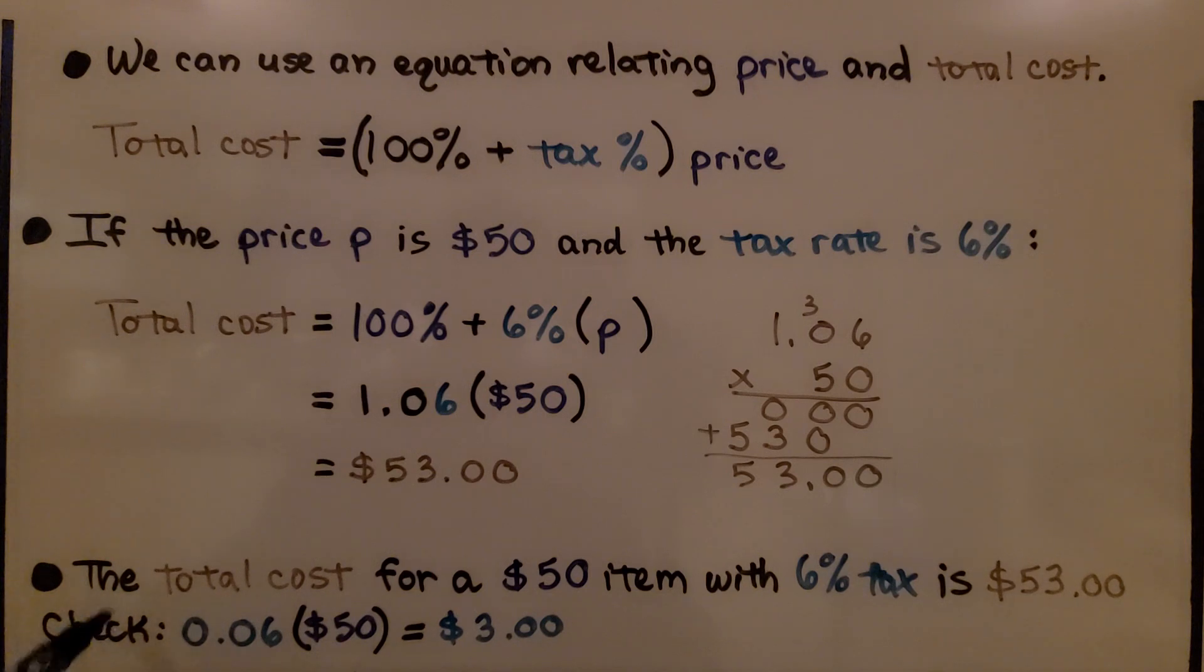And we can check it. We can write the tax, 6%, as a decimal, multiply it by $50, and we get $3. We add the 50 plus the $3, we get $53. We know we did it correctly.